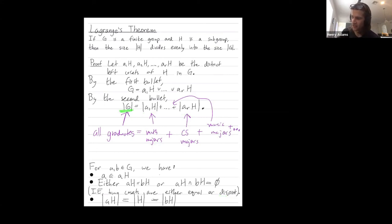So the size of the group is indeed equal on the nose to the sum of the size of the various cosets. No element is being counted in more than one coset, even though a student might be more than one major.